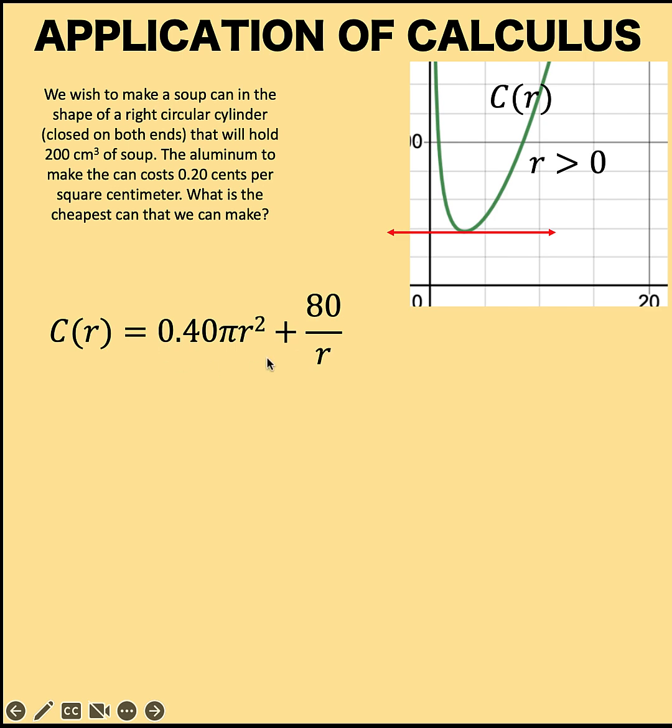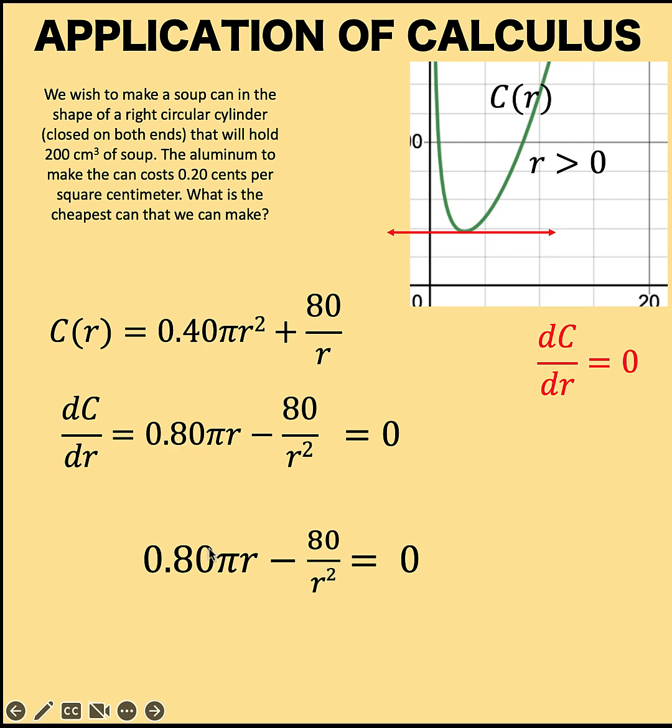So, if you find the first derivative of this cost function and equate that derivative to 0, then we are basically finding the value of r which will result to a slope of 0. So, let's compute for the first derivative. The derivative of the cost function with respect to the variable r is equal to the derivative of the first term plus the derivative of the second term. The derivative of 0.40πr² is equal to 2 times 0.40 times π, which is 0.80π. And we subtract 1 from the exponent of r² to get r. The derivative of 80/r is equal to negative 80/r², using the power rule of differentiation. Then, we want to equate this derivative to 0.